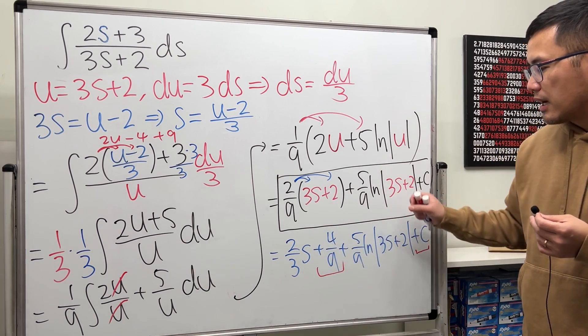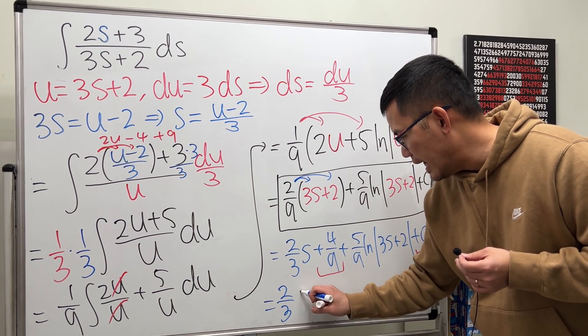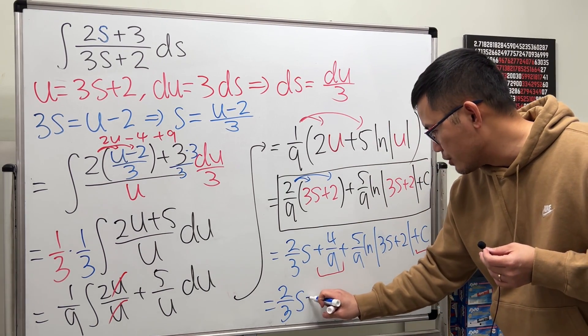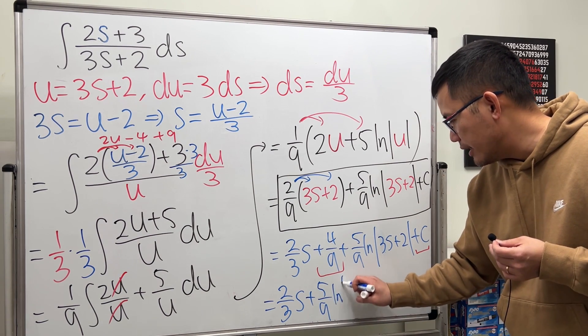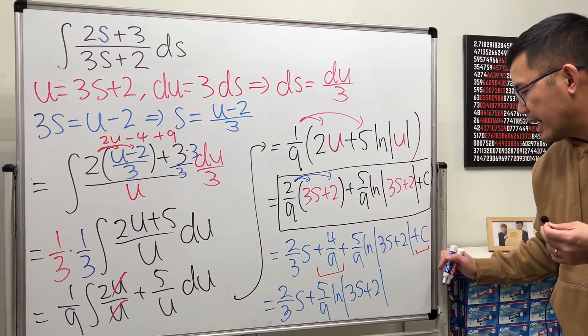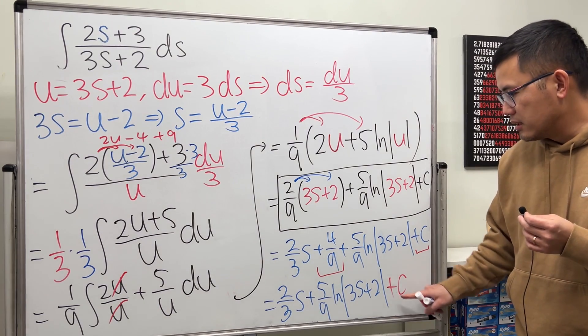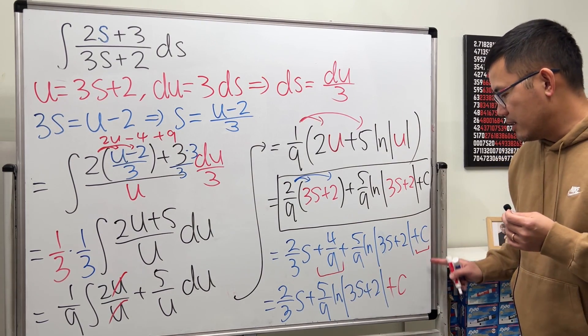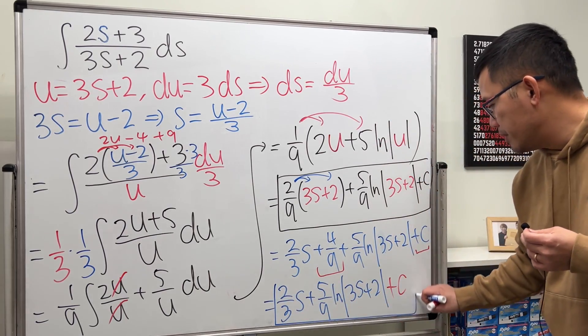They will combine the constants and they will just present this as 2 over 3s. And then write down the function part, which is 5 over 9 ln absolute value 3s plus 2. And then at the end, this and that, they put it to be another constant. So this red constant is a combination of this and that, which is different from the original c. So be careful with that.